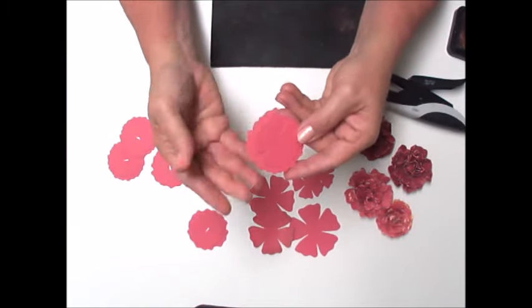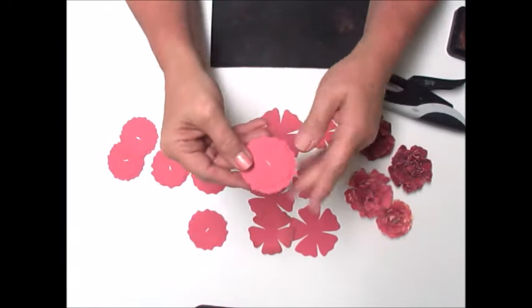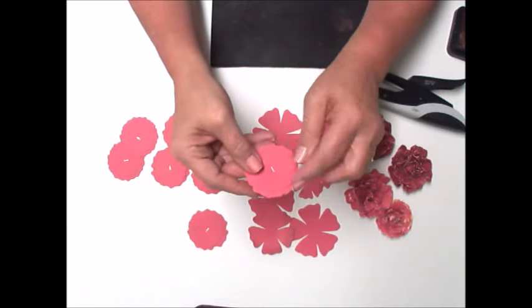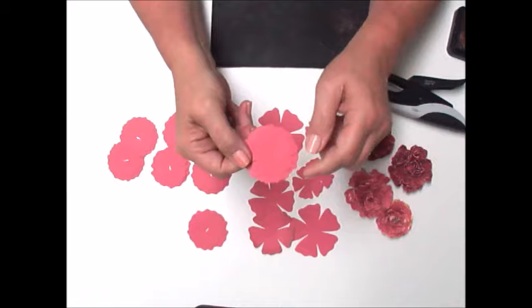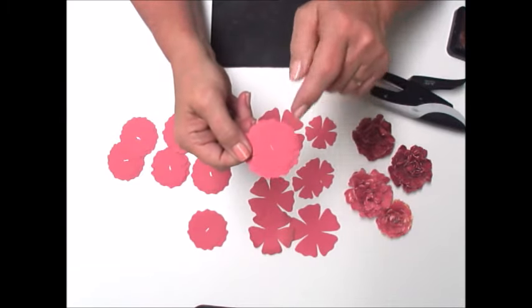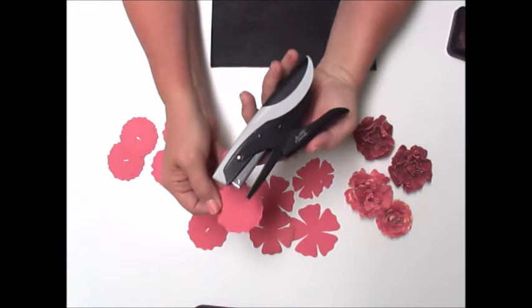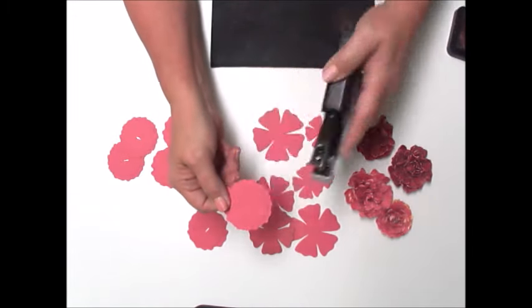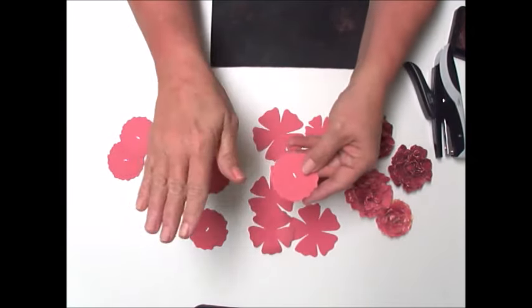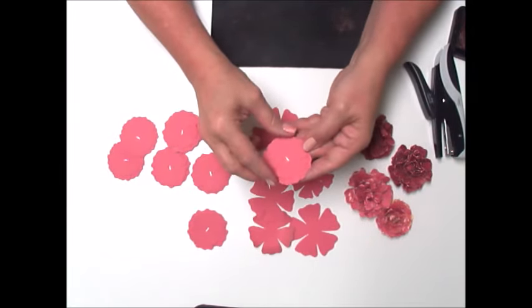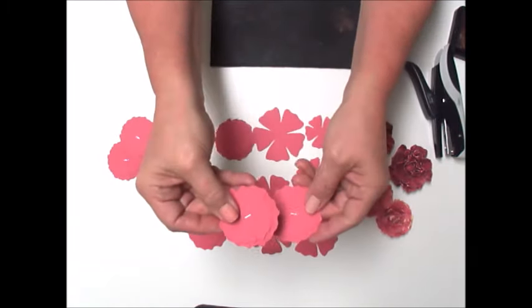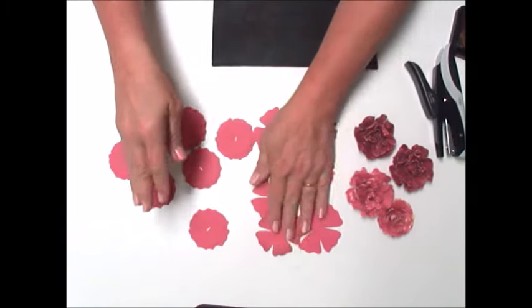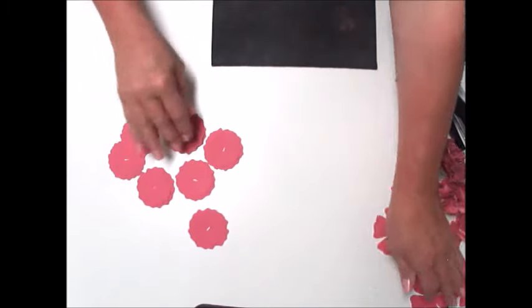You can use a brad in the middle, poke a hole and use a brad, but what I found is the hole from the brad gave me a chance to tear the paper easier. The staple, the little Tim Holtz Tiny Tatcher staple, I didn't tear a flower.